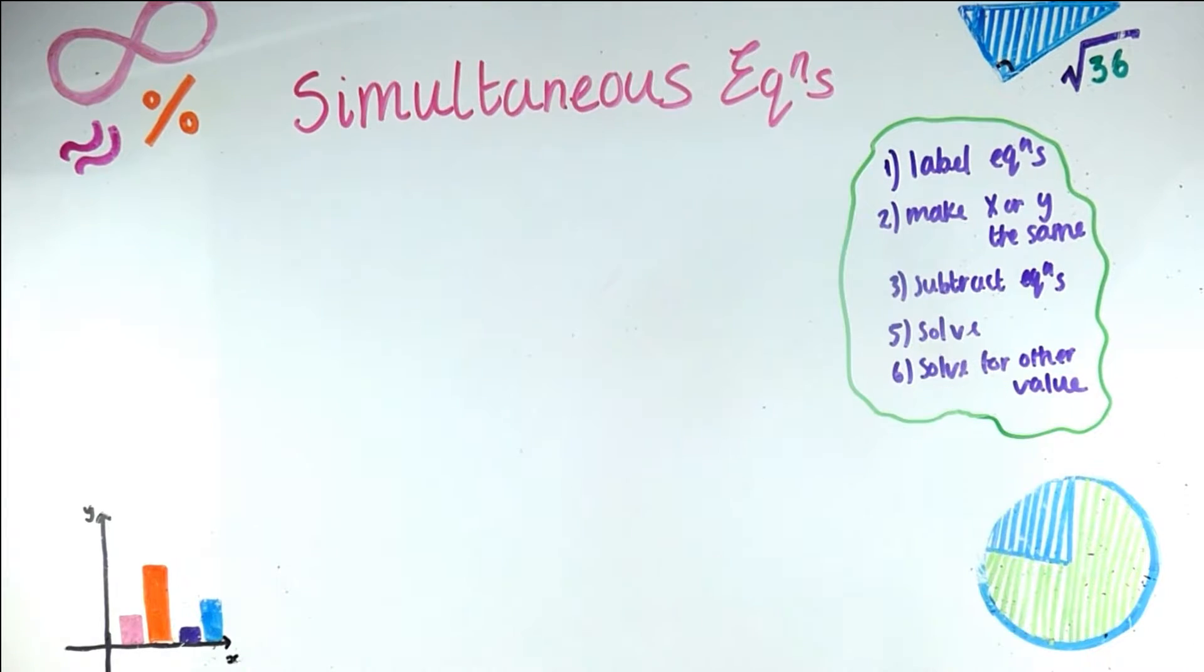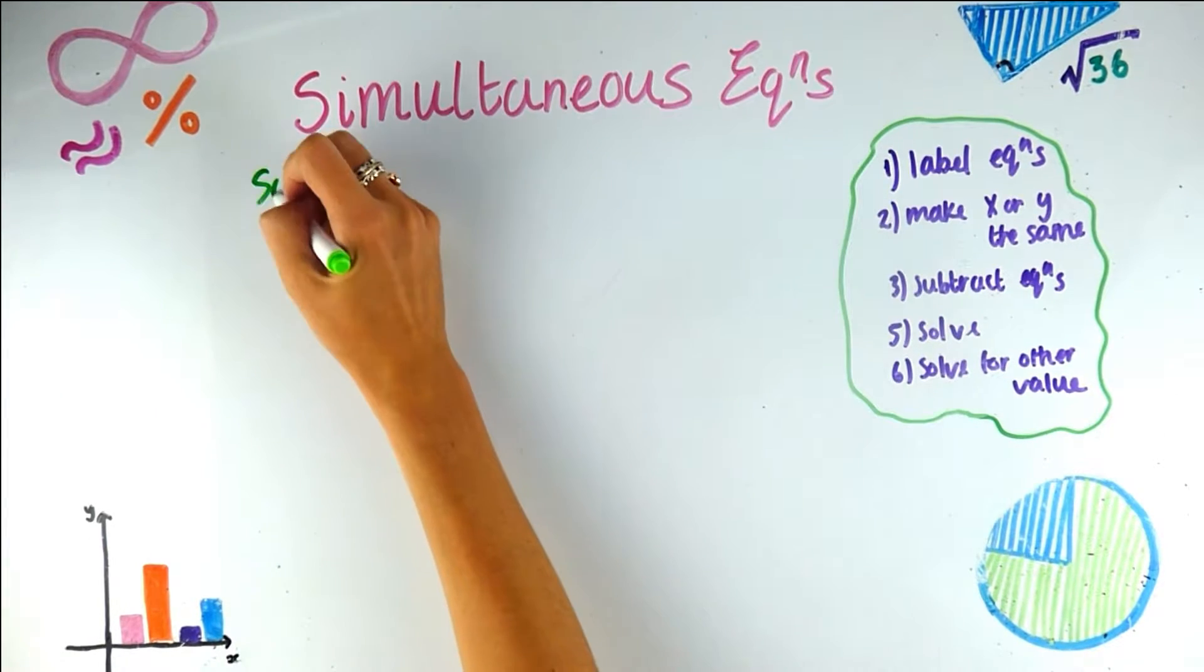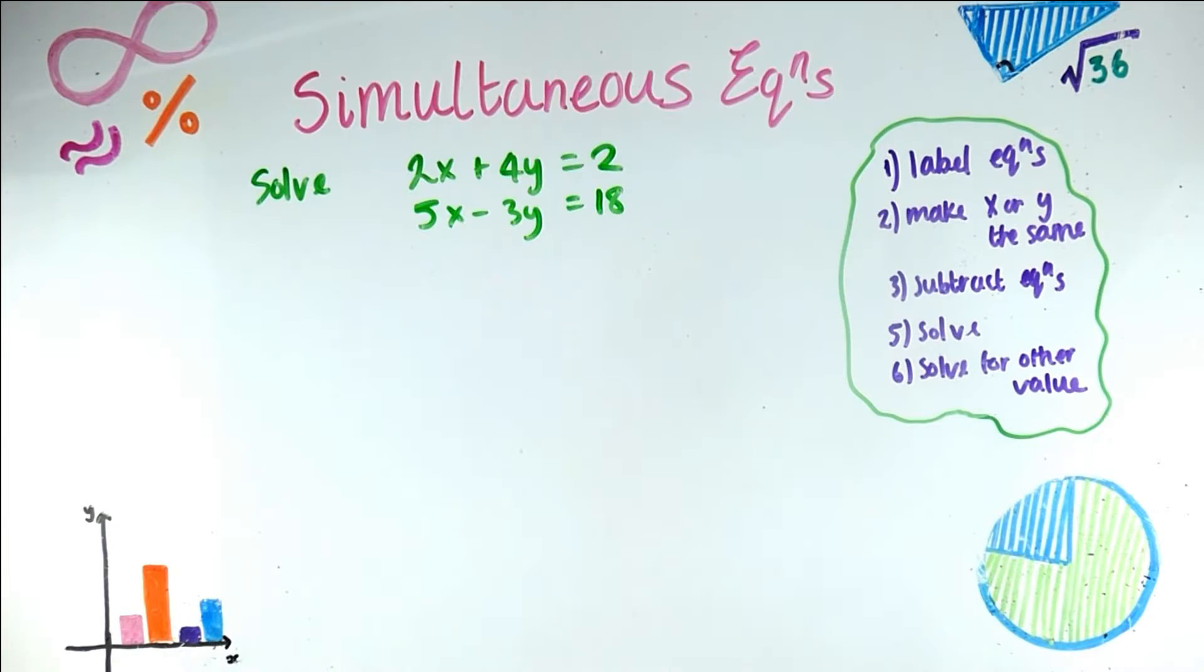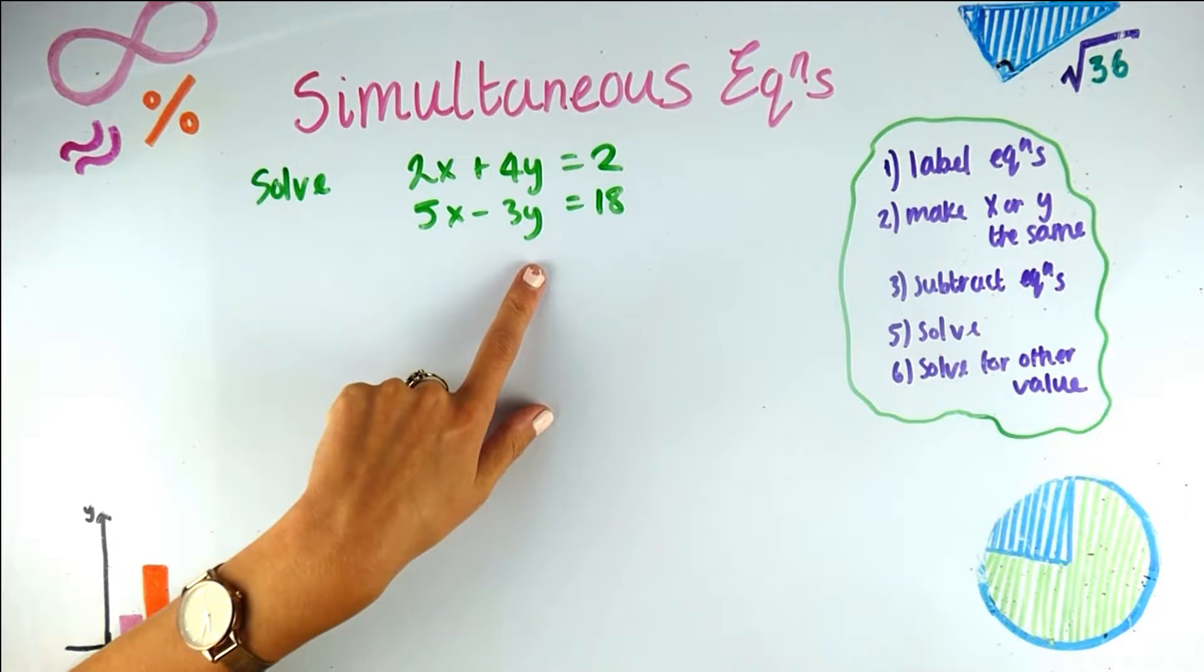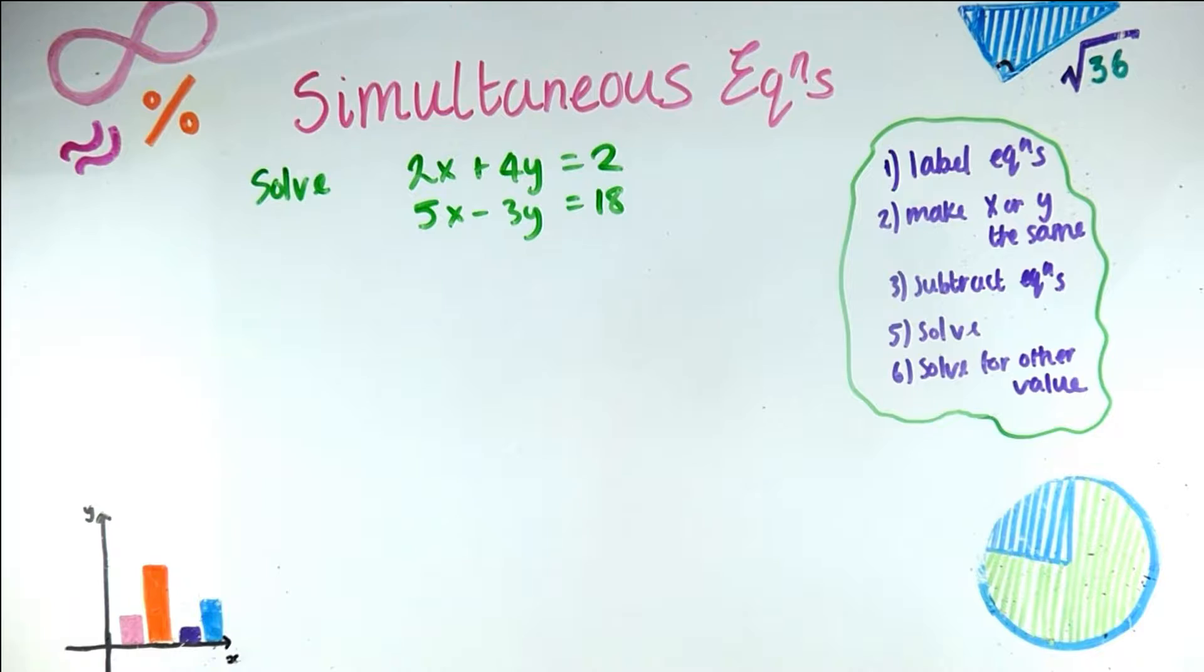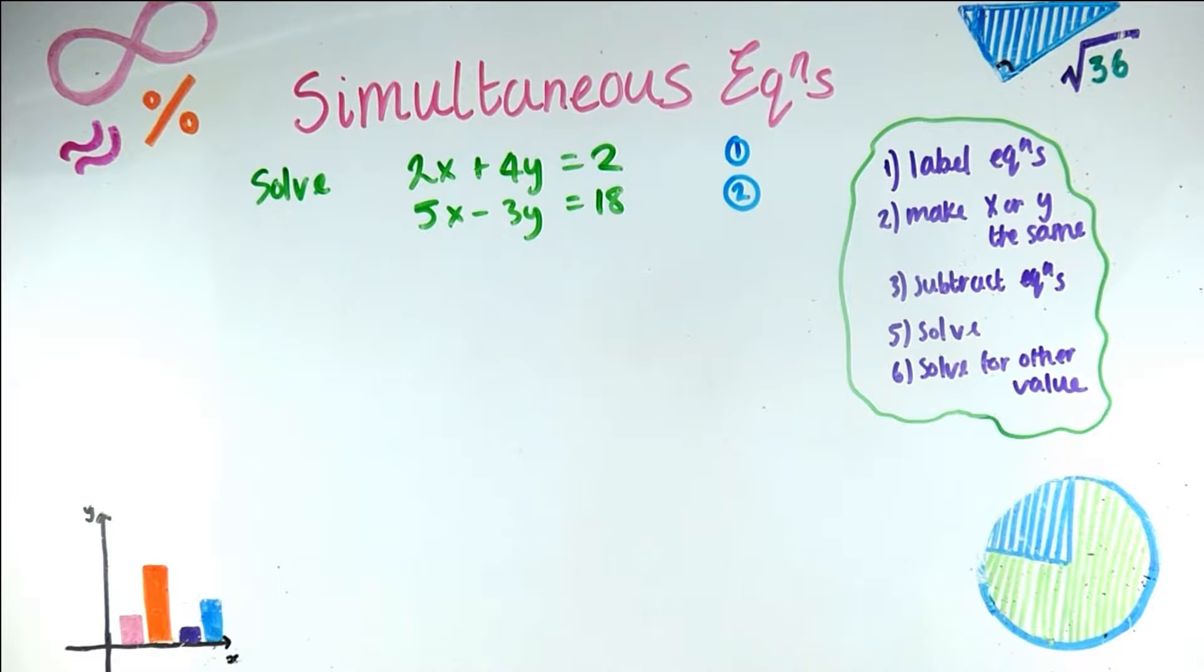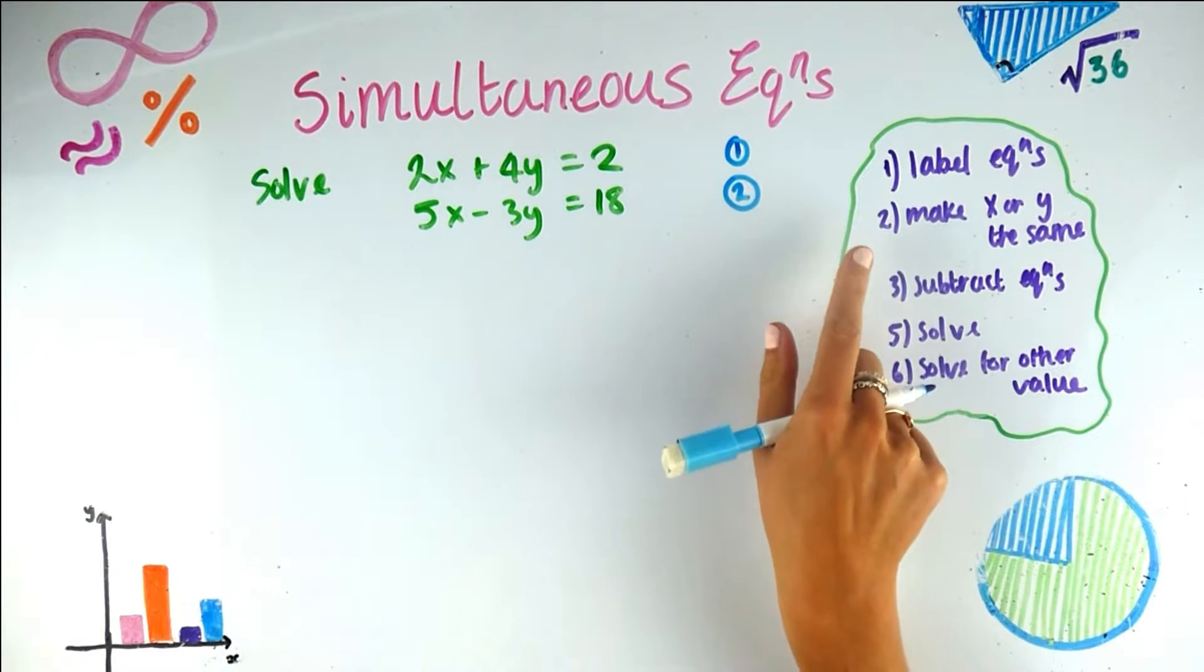Now I'm going to write down an example and we're going to follow the steps. So solve 2x plus 4y equals 2 and 5x minus 3y equals 18. Now we know these are simultaneous equations because there's two of them and there's two unknowns, x and y. So step one, label equations. So I'm going to label this one 1 and this one 2. That's just to get a bit of order. Step two, so that's fine.